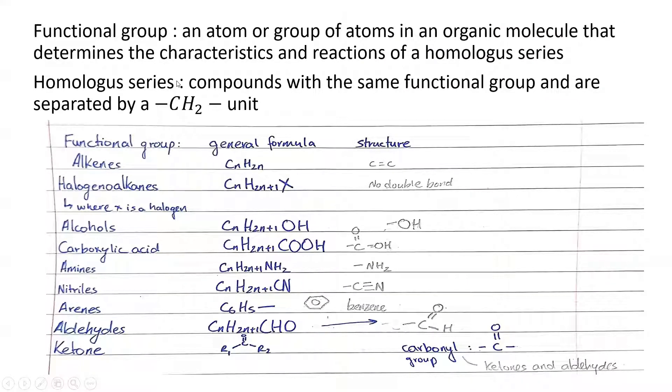Next up, functional groups is an atom or a group of atoms in an organic molecule that determines the characteristics and the reactions of a homologous series. Okay, so a homologous series compound to the same functional group and are separated by a CH2 unit. So as I said over here, this is the double bond over here is the functional group or the structure that is characterized by the final functional group. So halogen or alkanes have an X, which is denoted by a halogen, and these are the general formula for all these functional groups. And what I mean by it's separated by a CH2 unit, I'm not saying that each and every, for it to take place, it must be only separated by one CH2 unit. In fact, it can be a multiple of CH2 units. So for example, methane is one carbon, and then we have propane, which is three carbon, so that's separated by two CH2 units. So that's one example.